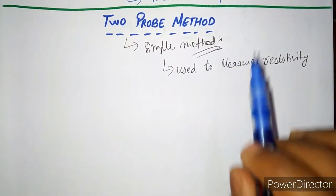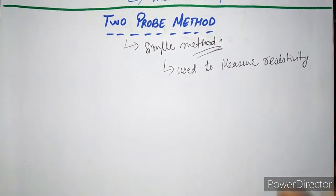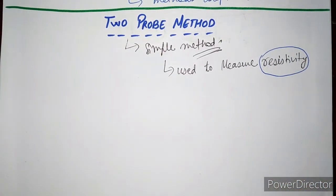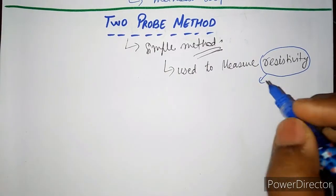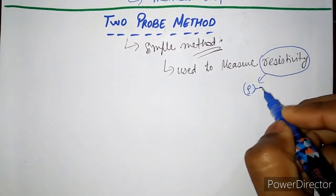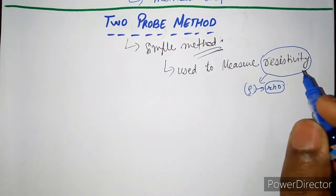It is a simple method which is used to measure the resistivity of a material. Now let's see what is the meaning of resistivity. It is simply denoted by the symbol ρ and it is pronounced as RHO.